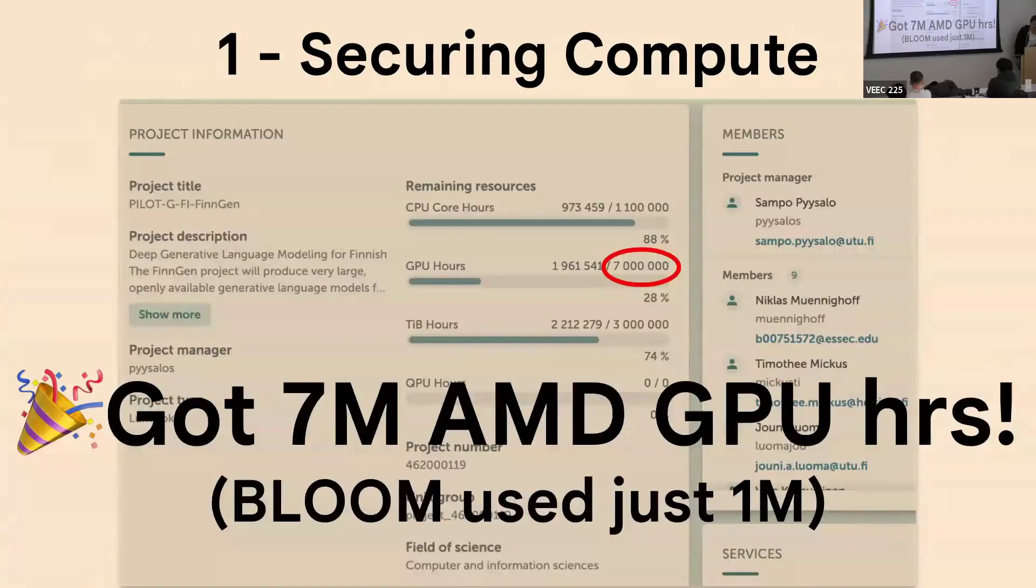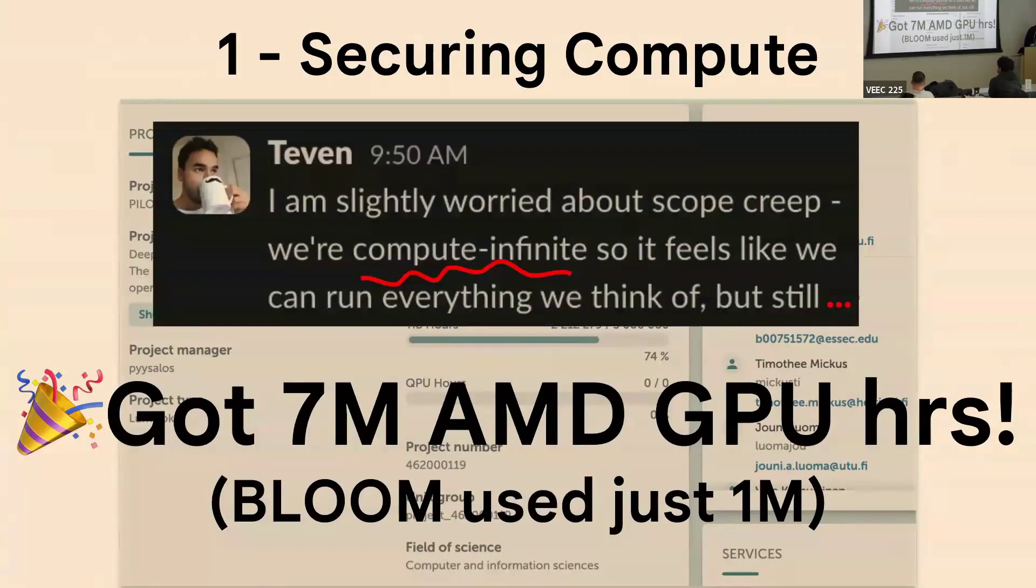So we were able to get 7 million AMD GPU hours. For comparison, Bloom only used 1 million, and the Bloom model had 176 billion parameters, so that was pretty huge. Tevin even called the situation compute infinite.